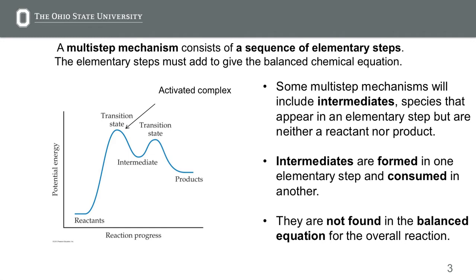When we have a reaction that occurs in multiple steps, we see an intermediate. Some multi-step mechanisms will include intermediates. These are species that appear in an elementary step but are not a reactant or a product.